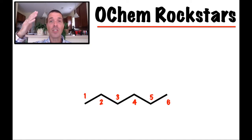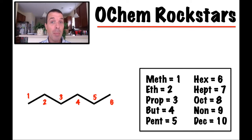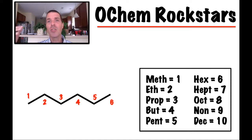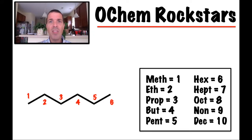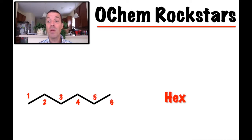There's going to be a prefix and a suffix. These are the prefixes: meth, eth, pro, bu, pent — one, two, three, four, five — and so forth. Some of these you're already familiar with. For example, pentagon has five sides, octagon is eight, hexagon is six. So there are just a few you'll need to commit to memory. The prefix tells us the number of carbons.